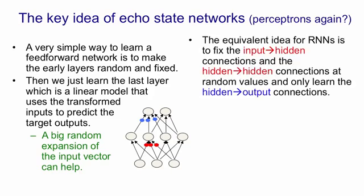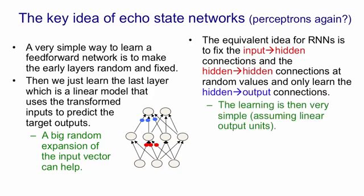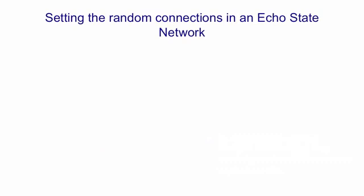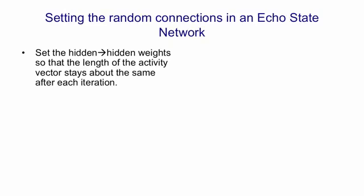The idea is to make the input-to-hidden connections and the hidden-to-hidden connections have random values that are carefully chosen, and just learn the final layer of hidden-to-output connections. The learning is then very simple if you use linear output units, and it can be done extremely fast. This approach is only ever going to work if you set the random connections very carefully so that the recurrent neural network doesn't die out with no activity and doesn't explode. The way they set the random connections in an echo-state network is they set the hidden-to-hidden weights so that the length of the activity vector stays about the same after each iteration. For those of you used to linear systems and matrices, you're setting it so the spectral radius is one.